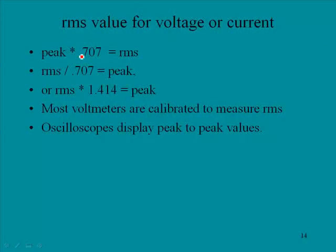RMS values for voltage or current. If you take peak times 0.707 will give you the RMS value, or you can take RMS value divided by 0.707, and that will give you the peak value. Or you can say RMS times 1.414, and that will give you peak. We already did this one. We started out with 1 volt times 0.707, and obviously we got 0.707 volts.